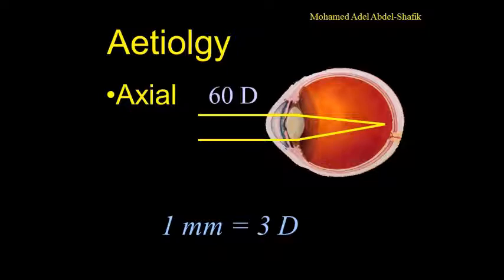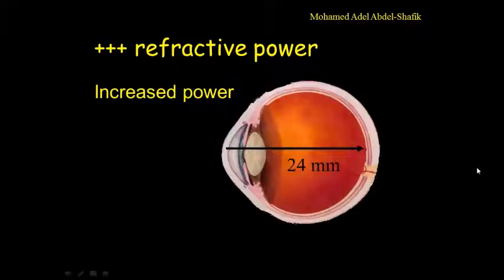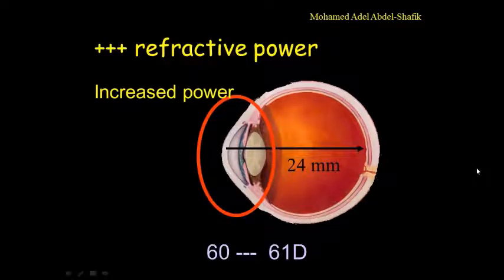Every one millimeter change in the axial length will result in three diopters error. The second is the refractive power, increase of the refraction. So instead of having an optical system of 60, if it's 61, the focus will be inside the vitreous cavity.